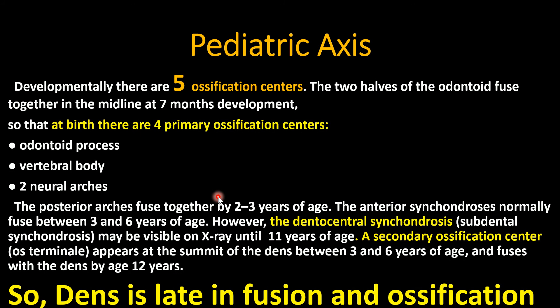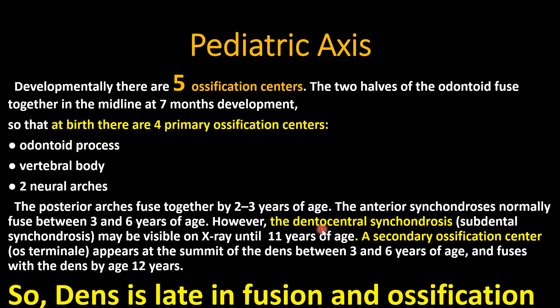The pediatric axis has five primary ossification centers. Before birth, the two halves of the odontoid fuse together, leaving four primary ossification centers: the odontoid process, the vertebral body, and two neural arches. A secondary ossification center appears at the summit of the dens between three and six years of age, fusing by age 12.